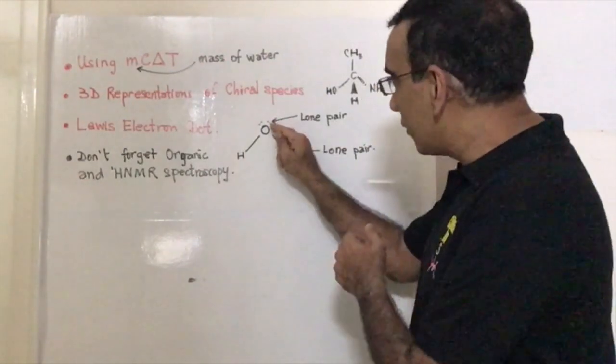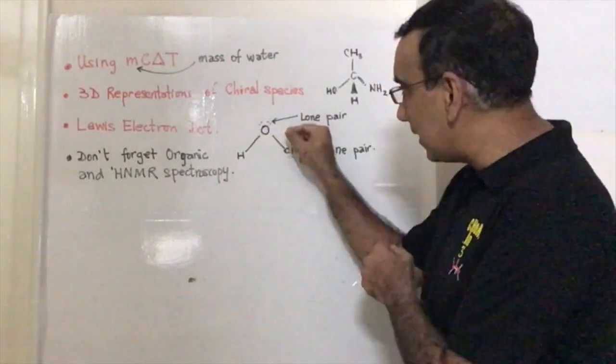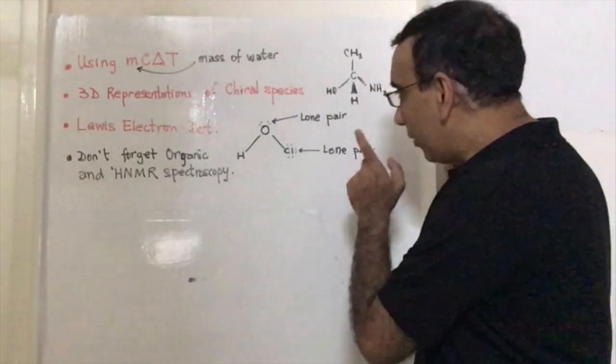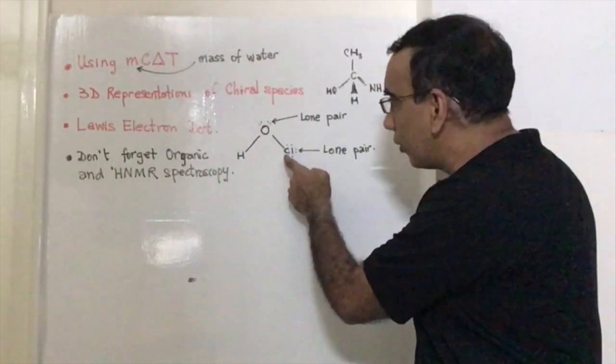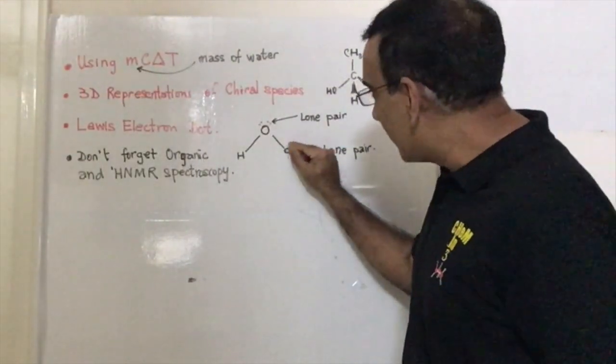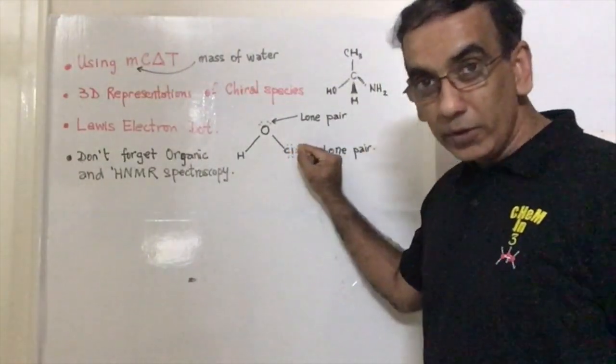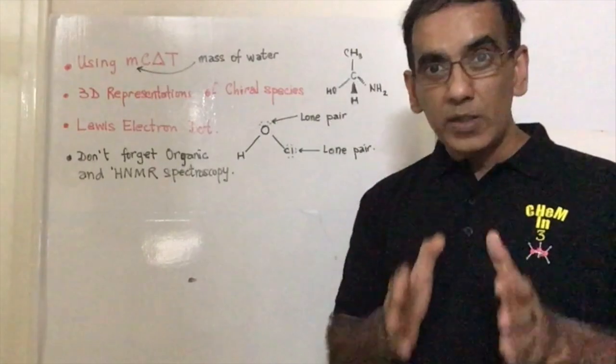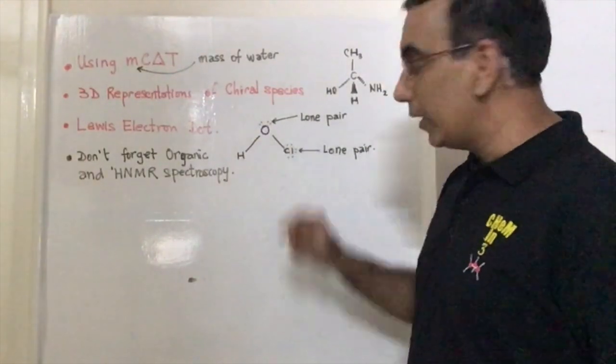which can be represented by two dots or by a single solid line. But what students tend to forget is suppose it were that a chlorine was forming a single bond here. This chlorine would have to have all of its lone pairs included to get a full Lewis dot structure for this molecule. It's often that students forget to include these lone pairs on the peripheral atoms.